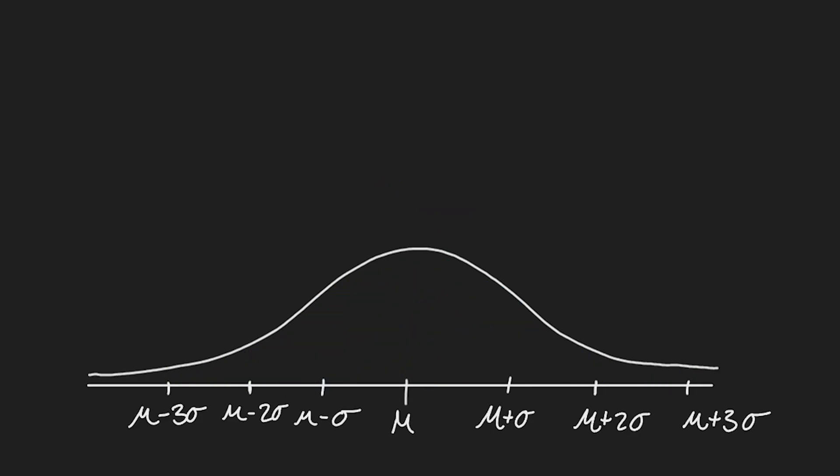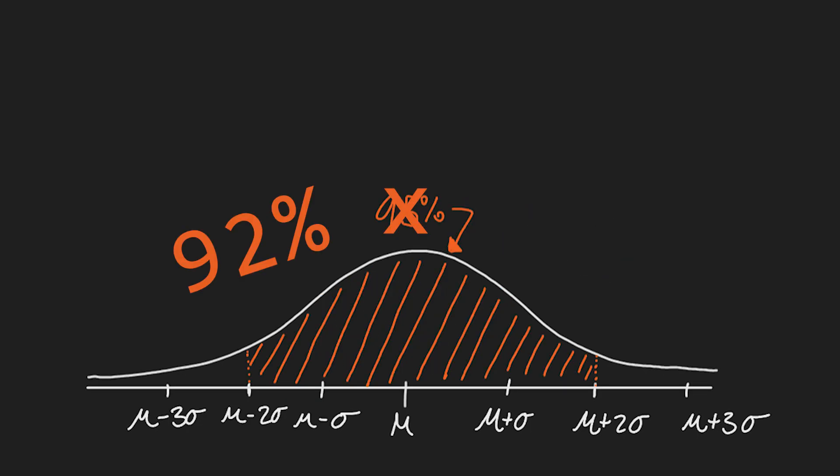Remember our 68, 95, 99.7 rule from earlier? Well, the approximation is 66, 92, 98.3, so it's pretty close, but not perfect. I'll get into the code towards the end of this section, but to understand it, we need a little bit more context. And don't tune this part out, because it's going to be helpful for our next section.